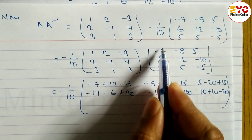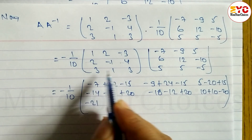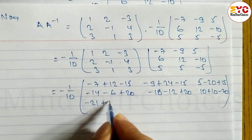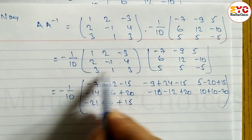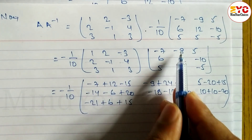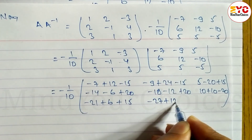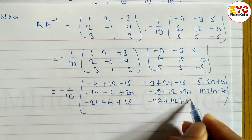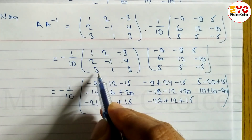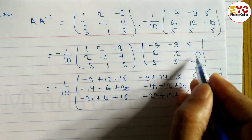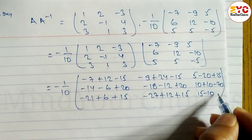Third row into first column: 3×(minus 7) + 1×6 + 3×5 = minus 21 + 6 + 15 = 0. Third row into second column: 3×(minus 9) + 1×12 + 3×5 = minus 27 + 12 + 15 = 0. Third row into third column: 3×5 + 1×(minus 10) + 3×(minus 5) = 15 minus 10 minus 15 = minus 10.